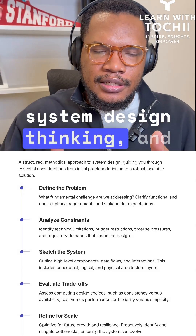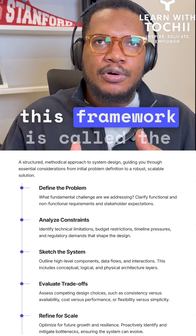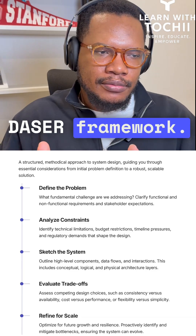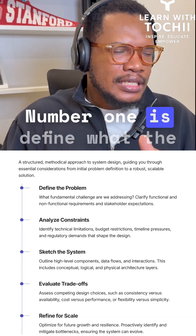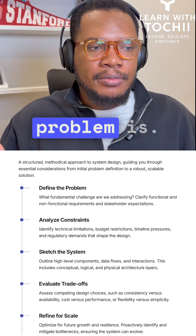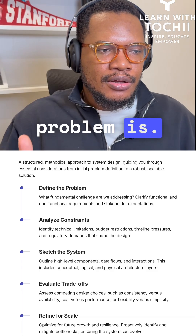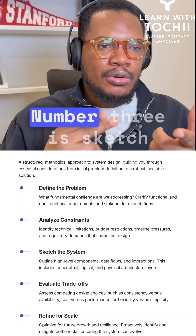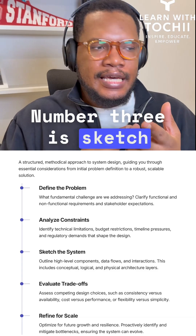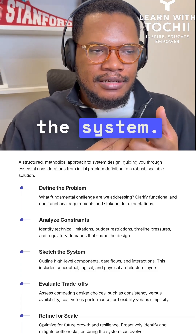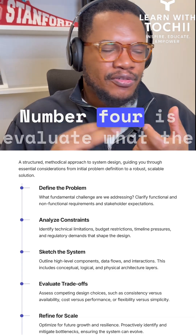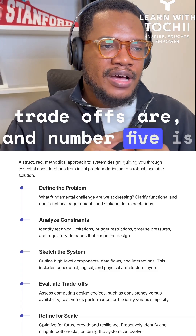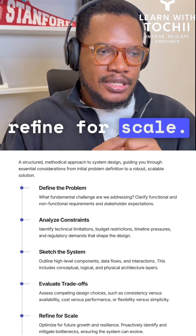Framework for System Design Thinking. This framework is called the DESA framework. Number one is define what the problem is. Number two is analyze the constraints. Number three is sketch the system. Number four is evaluate what the trade-offs are. And number five is refine for scale.